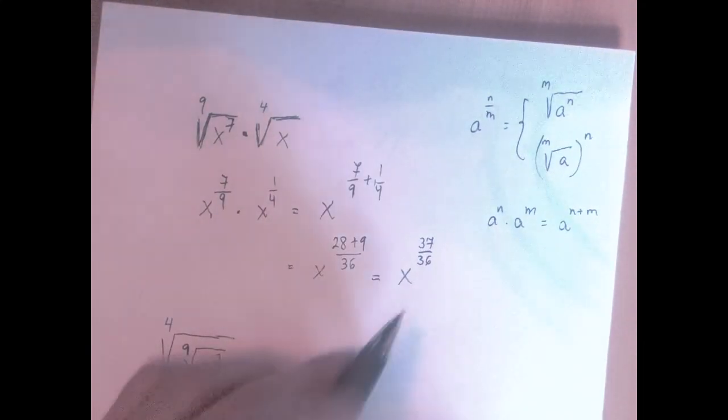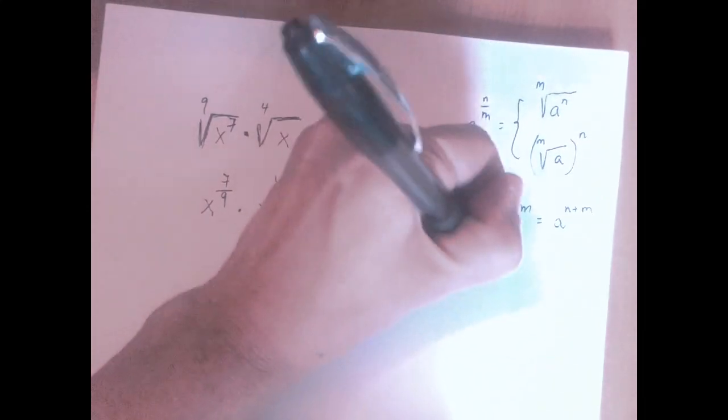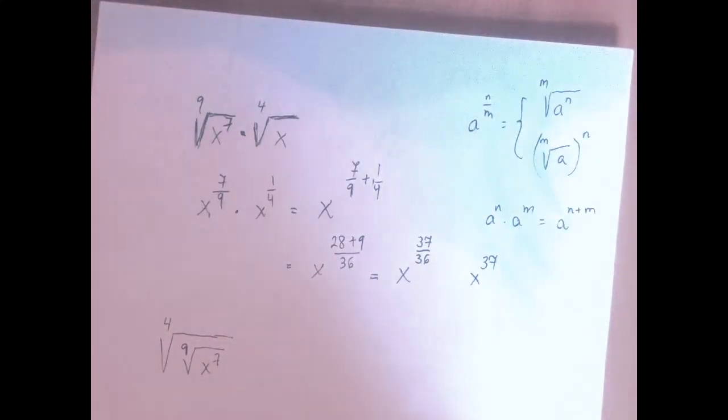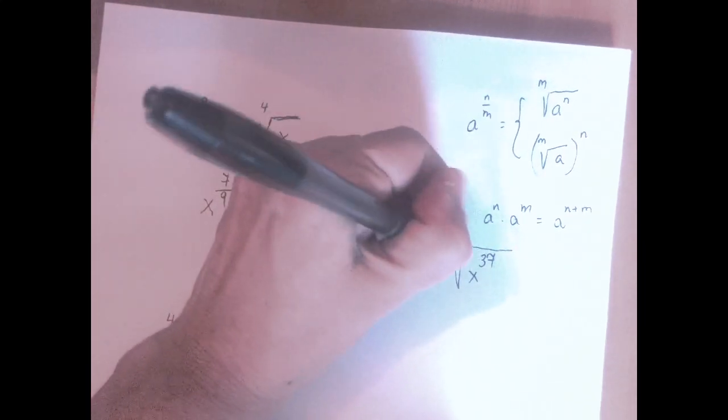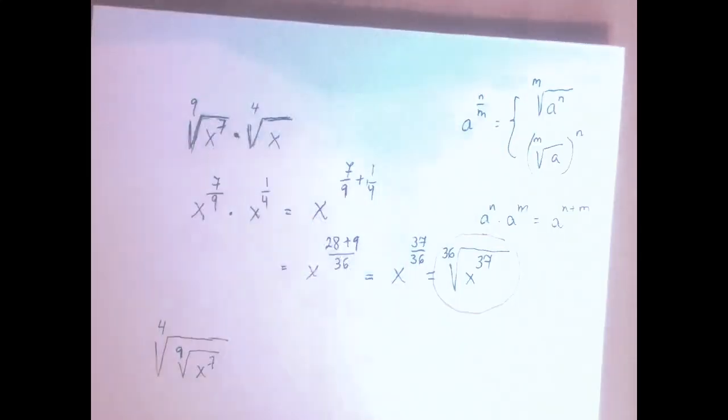Which is the same as, the numerator is the exponent, so 37 is the exponent, and the number in the denominator is the root. This is the final answer.